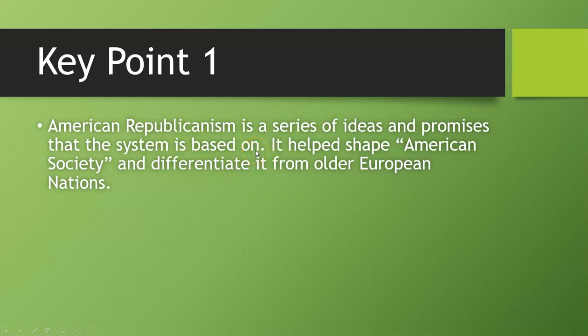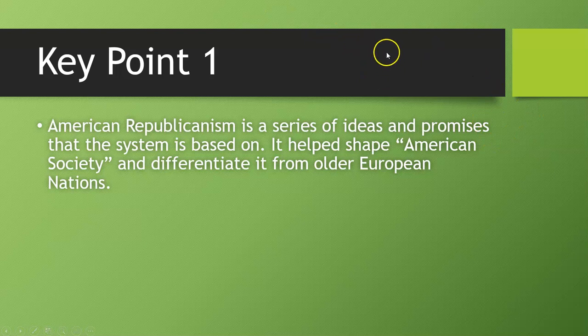American republicanism is the American system — it helped shape American society and differentiate it from older European nations. Basically, it's like the ideas and the promises that the system of the U.S. is based on. If the United States is a pie, American republicanism are the ingredients. It's what makes the United States the United States, at least in theory. It shapes American society and makes America different from European countries — it's like an experiment of all these ideas.